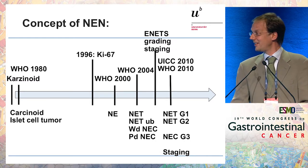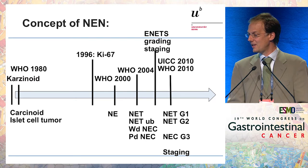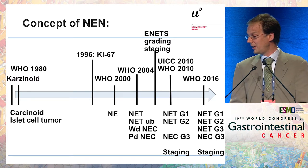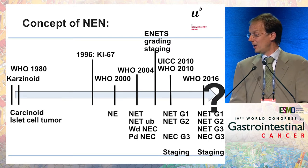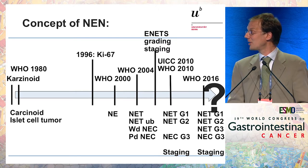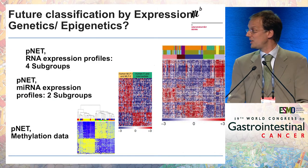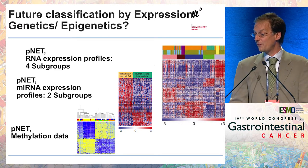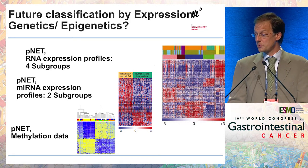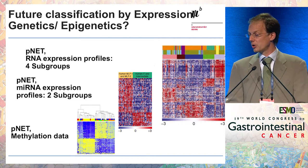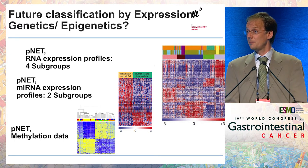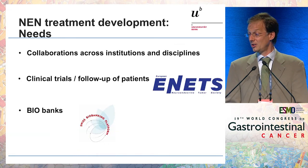This is the long road the NET classification has traveled. An important step was the Ki67 introduction, which took 15 years until it went into the clinic. Now we have the new concept of NET G3. What comes next? I think the next classification will be based on molecular data — different molecular subtypes on RNA level of pancreatic neuroendocrine tumors. We have four subgroups on RNA, two subgroups on microRNA, and two or three subgroups based on methylation data. To get there, we need to collaborate better across institutions and disciplines.